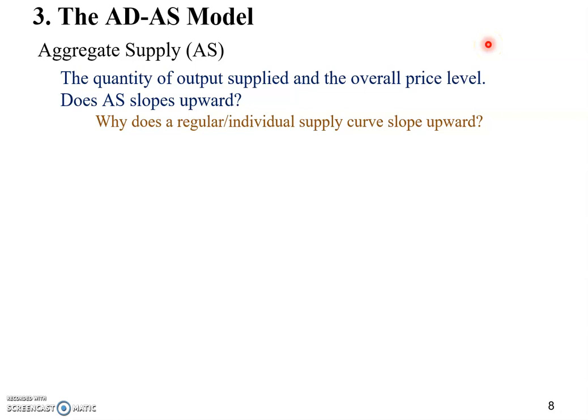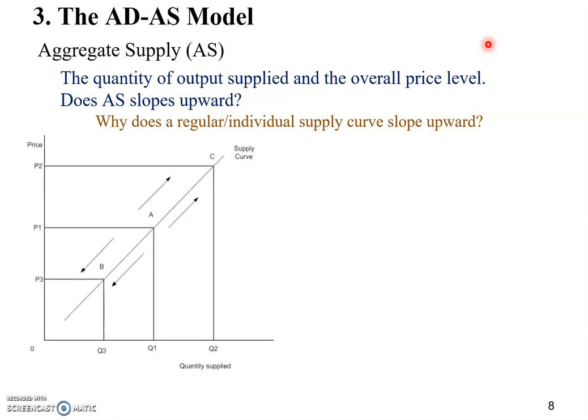Let's recall the reason why a regular supply curve on the individual market slopes upward, which we discussed in our intro and intermediate micro courses. Very briefly, let's talk about it.